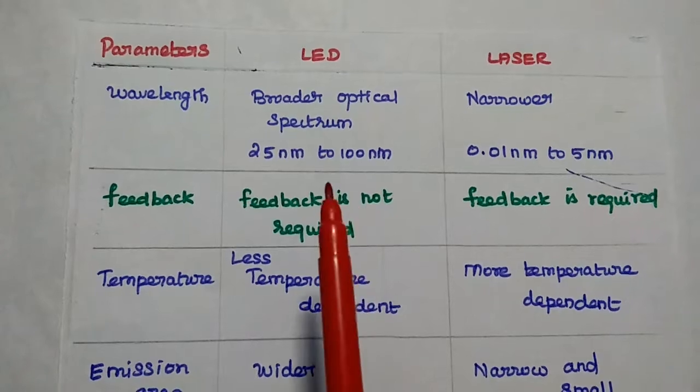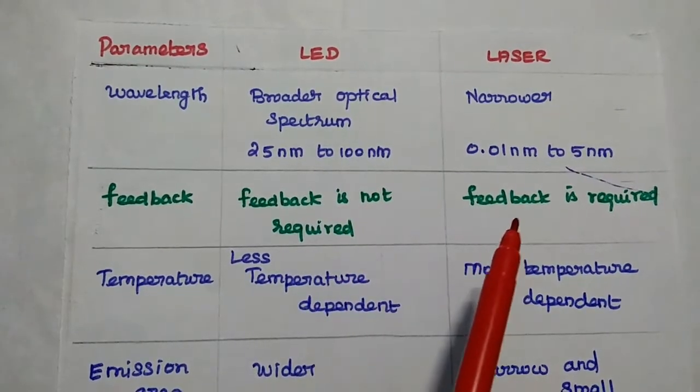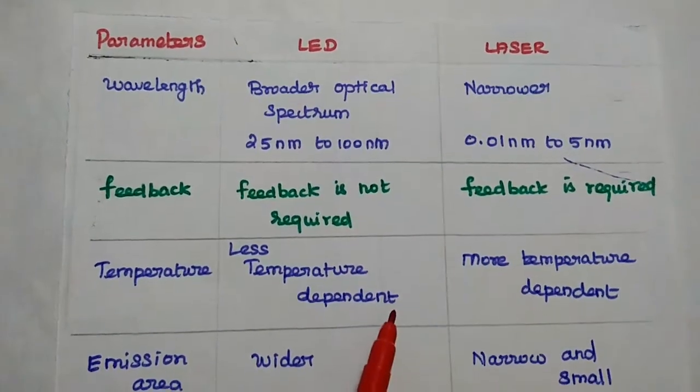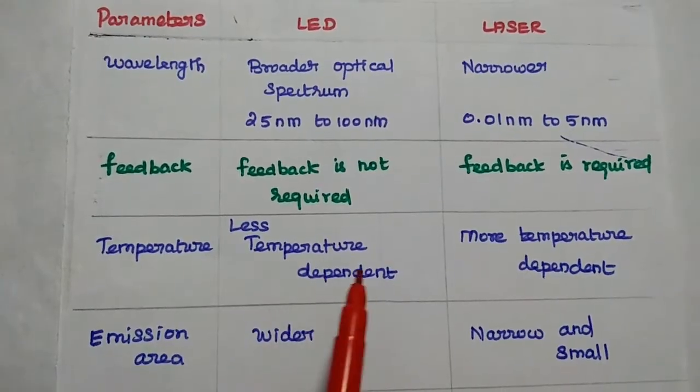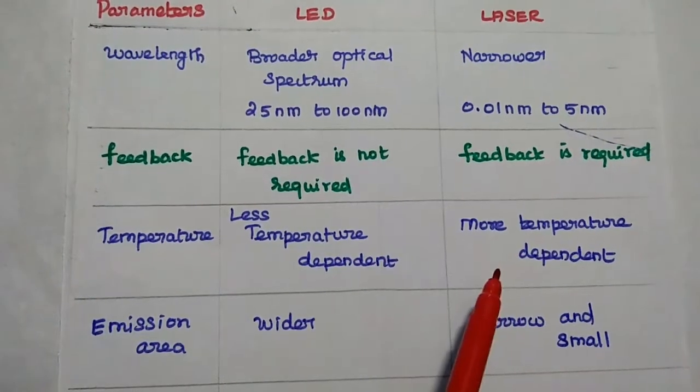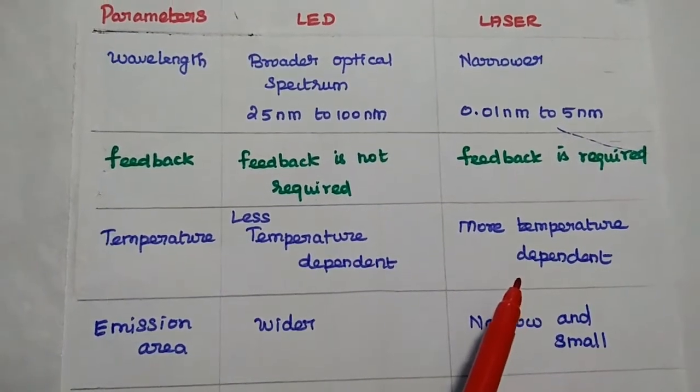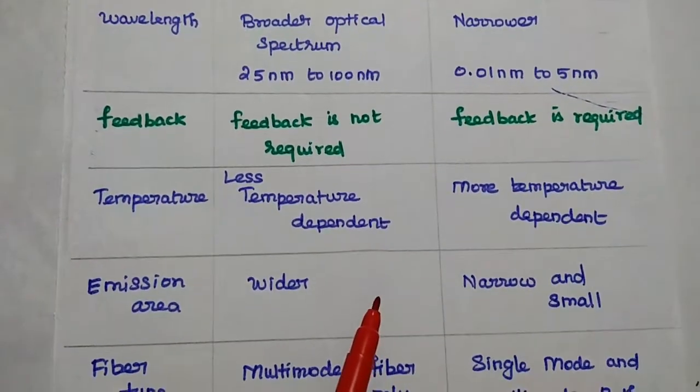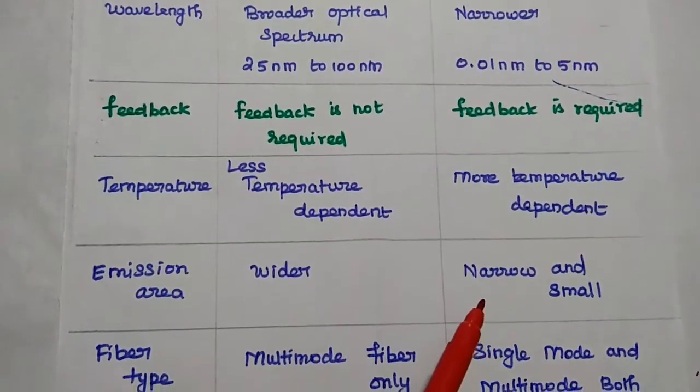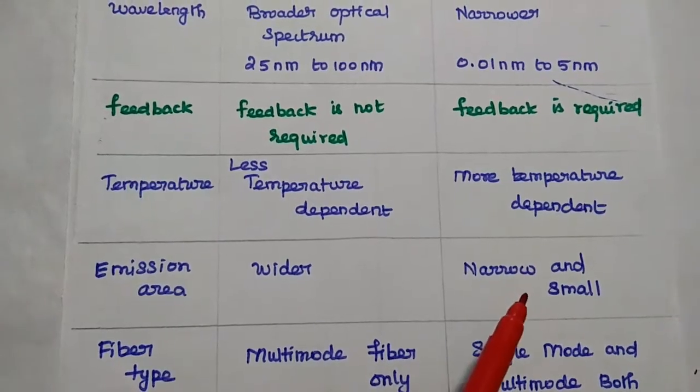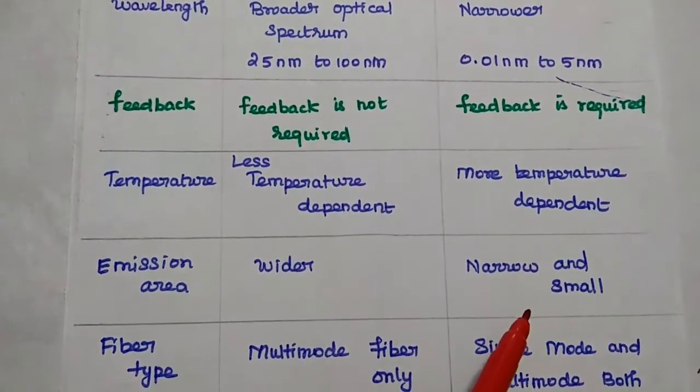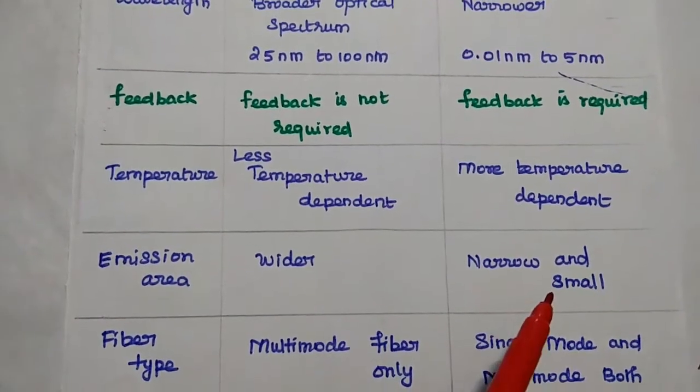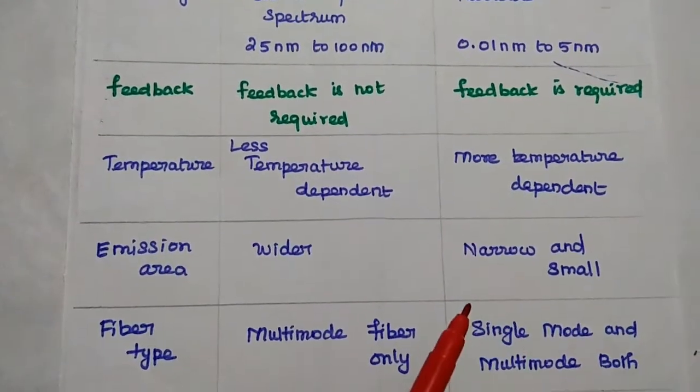Feedback is not required in LED, but for laser, feedback is required. LED is less temperature dependent, but laser is more temperature dependent. The emission area is wider in LED, but for laser is narrower and very small in size. Then only we can get coherent light.